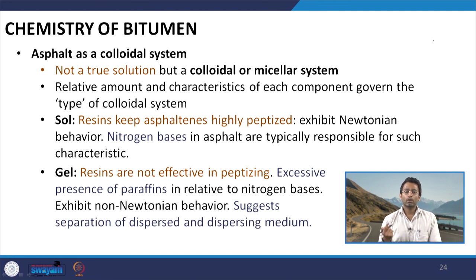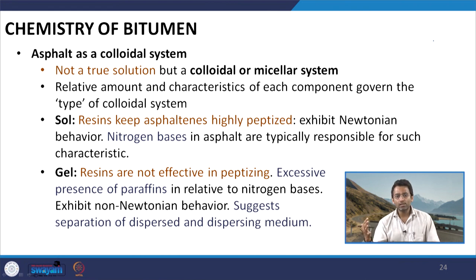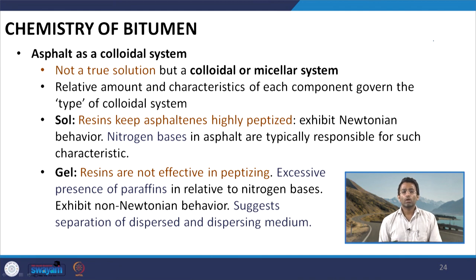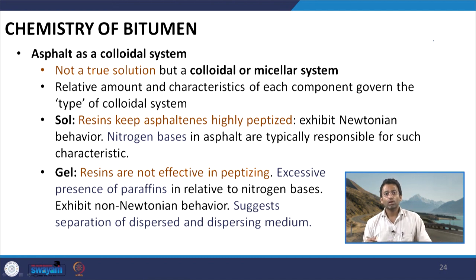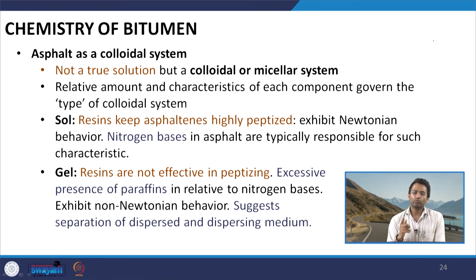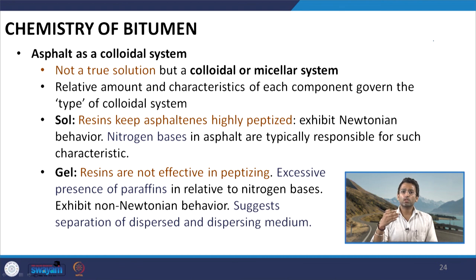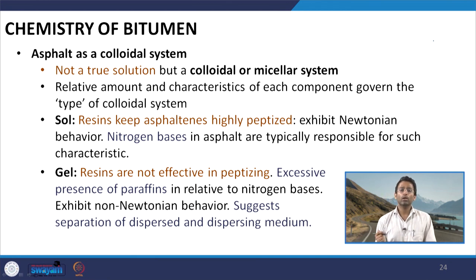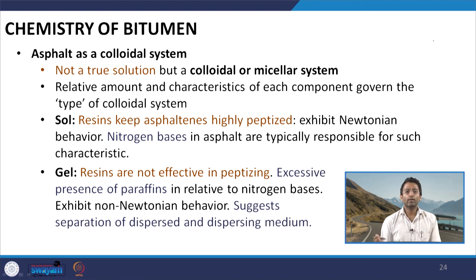In the gel type bitumen, we do not have sufficient amount of resins to peptize the asphaltenes, so these asphaltenes get a tendency to agglomerate and come closer to each other within the bitumen system. Studies have shown that excessive presence of paraffins relative to the nitrogen bases contributes to such a gel system. In fact, when we discuss about ageing in a later class, we will see that once we subject the sol type system to oxidation, the amount of lighter components starts getting reduced and it can transform itself into a gel type system. This type of bitumen exhibits non-Newtonian behaviour, suggesting separation of the dispersed phase and the dispersing medium.